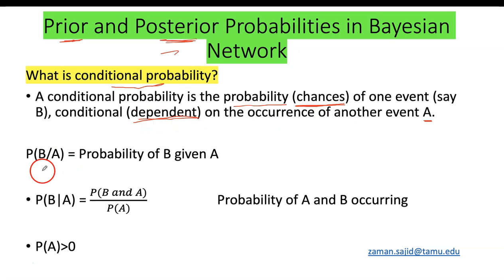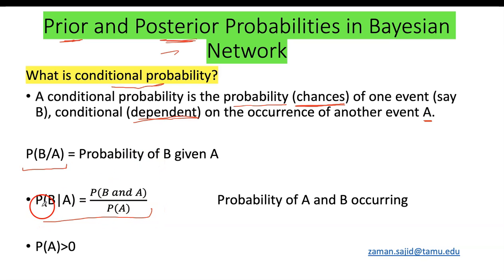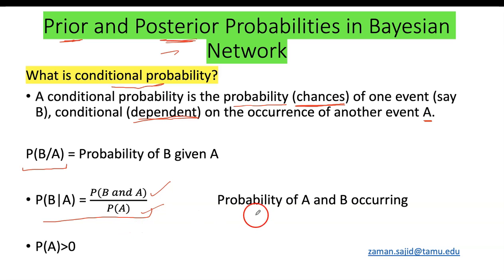It is written as the probability of B given A. There is a formula we use for this probability: the probability of B given A equals the probability of B and A over the probability of A. I will come to these terms in my next couple of slides.